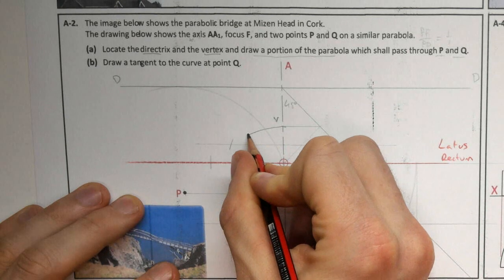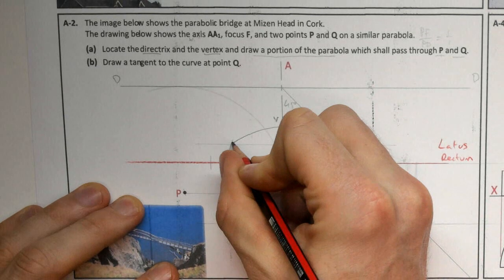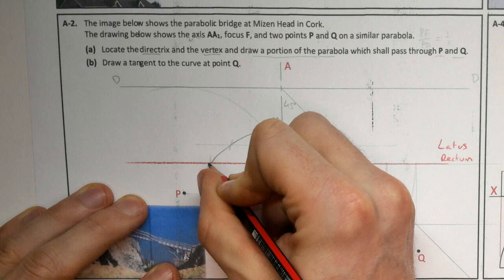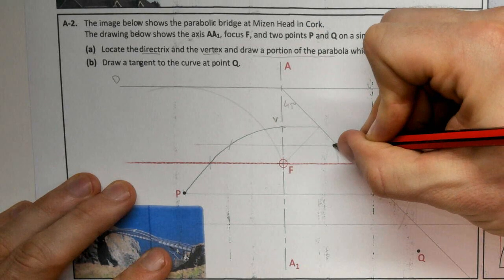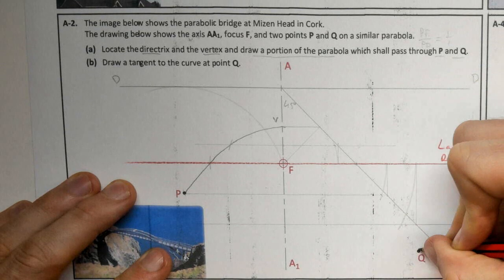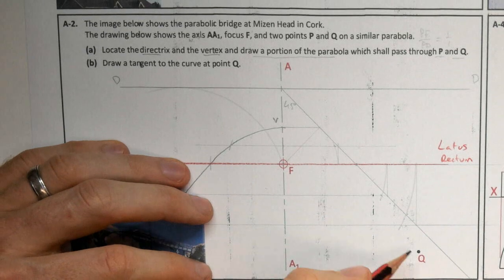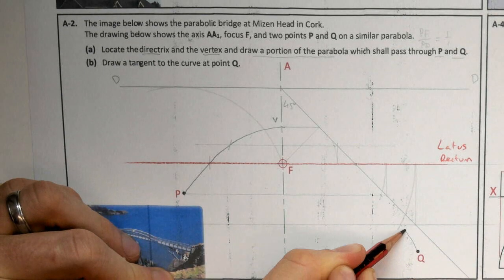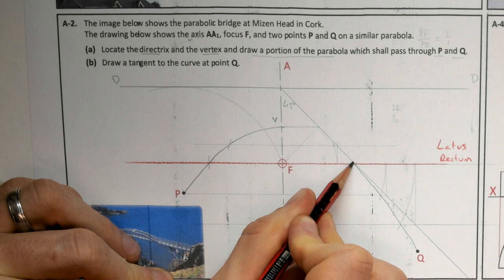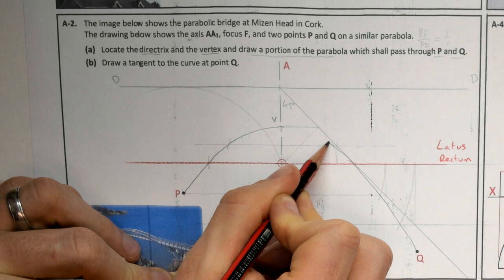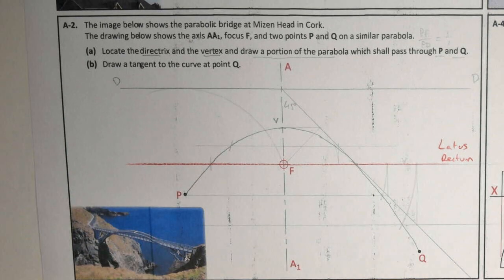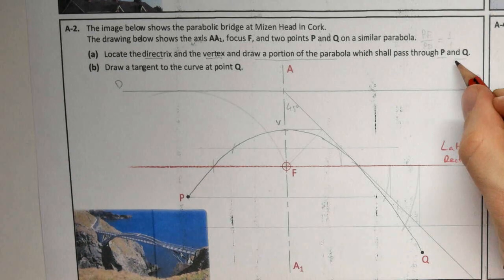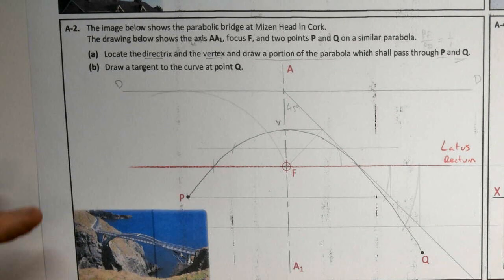So vertex here. And this is another point, another point, another point onto Q. So that's the portion of my curve drawn. So part A completed there.